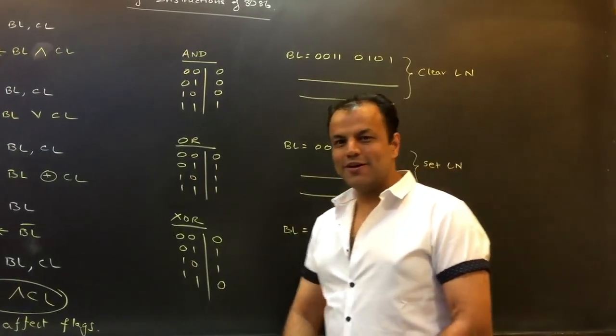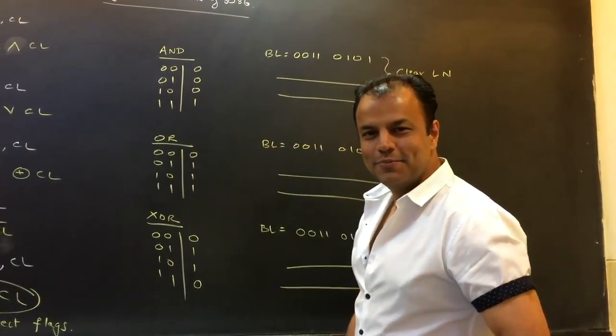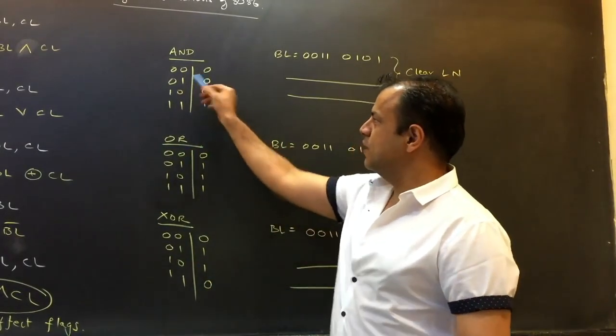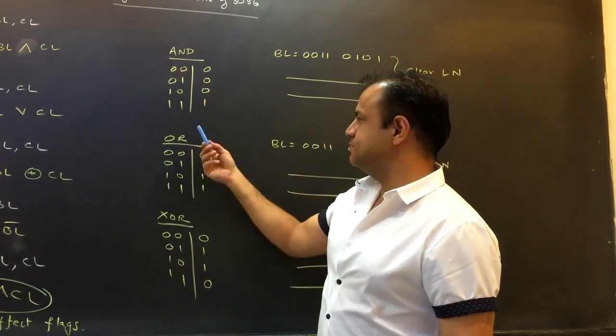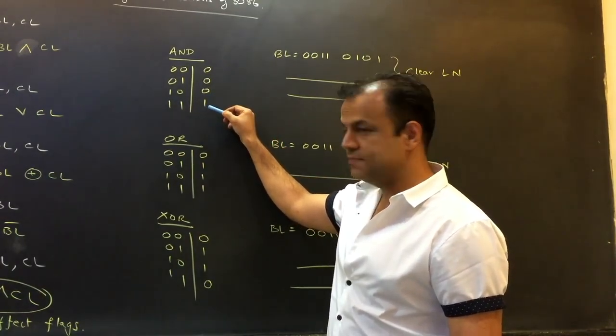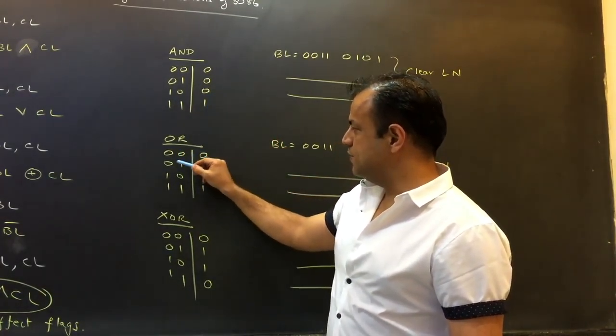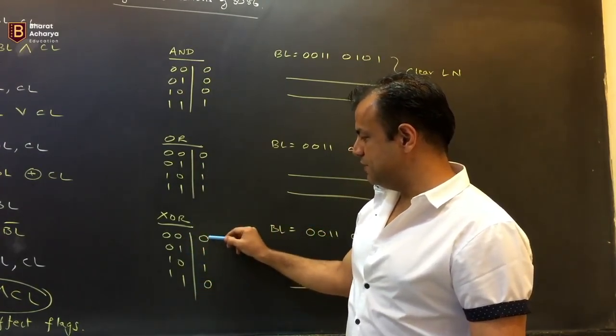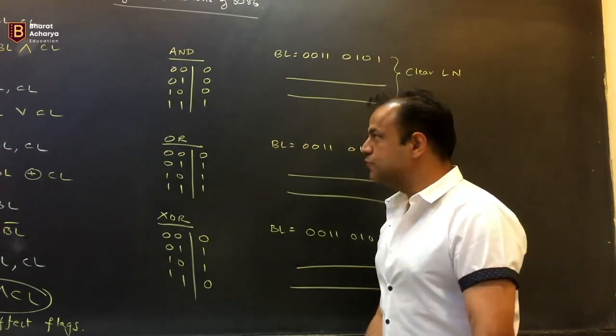Now, what's the use of these operations? AND, OR and XOR. They are so interesting. AND gate: 0 0 gives you 0, 0 1 gives you 0, 1 0 gives you 0, 1 1 gives you 1. OR gate: 0 0 gives you 0, 0 1 gives you 1, 1 0 gives you 1, 1 1 gives you 1. XOR gate: 0 0 gives you 0, 0 1 gives you 1, 1 0 gives you 1, 1 1 gives you 0.